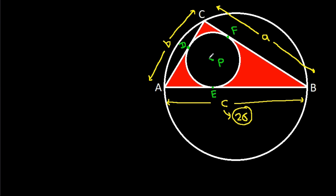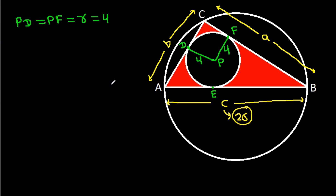Then PD and PF — PD will be equal to PF, which equals small r, that is 4. So PD is 4 and PF is 4. In any circle, the radius and tangent are perpendicular to each other. So this angle will be 90 degrees and this angle will be 90 degrees.